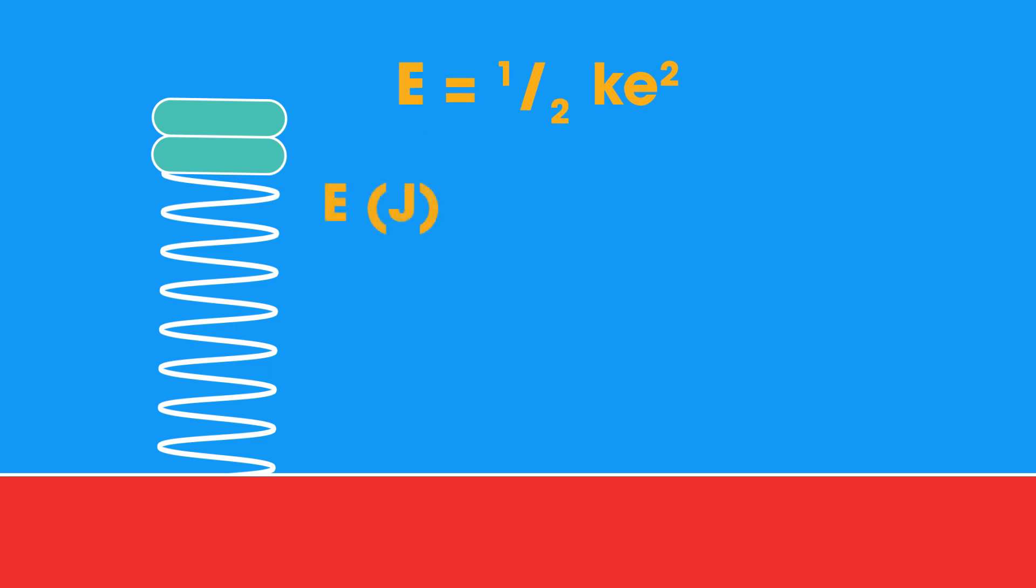Where elastic potential energy, E, is measured in joules, spring constant, K, in newtons per metre, and extension, E, in metres.